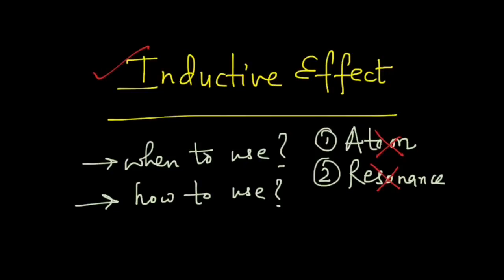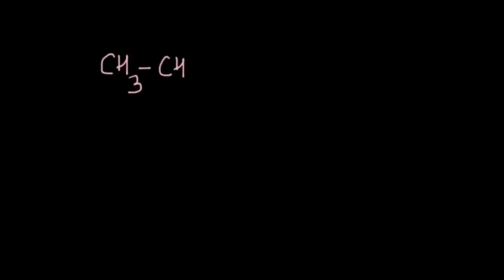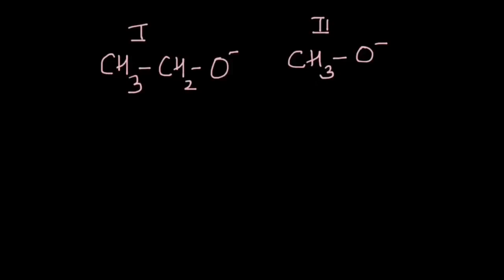Let's take an example. If we have two compounds — CH₃CH₂O⁻ and CH₃O⁻ — let's call them one and two and try to decide which one is more basic. The first factor, the atom, cannot help us here because the negative charge is present on the oxygen atom in both species.